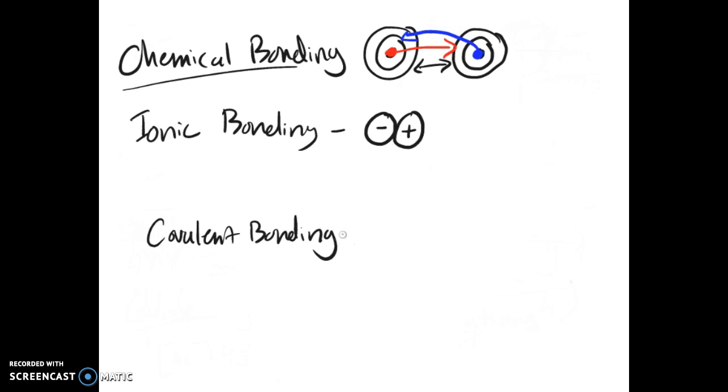On the other hand, covalent bonding is chemical bonding that results from the sharing of electron pairs between two atoms. So that's going to look more like you have your nucleus here, your nucleus here, there's some little electrons in here, and they're shared between the two. Both of them have it as part of their shell. In this case, this would look like hydrogen, but we'll get back to that in a second.